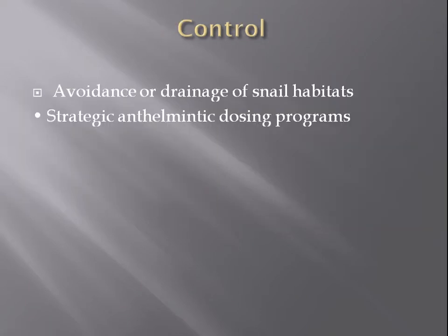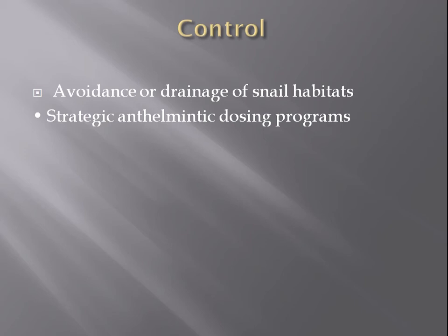What is the control of this disease? To control this disease, we avoid or drain the snail habitats. The second control measure is strategic and climatic dosing programs that kill Fasciola hepatica and other factors that cause the disease. Thank you very much.